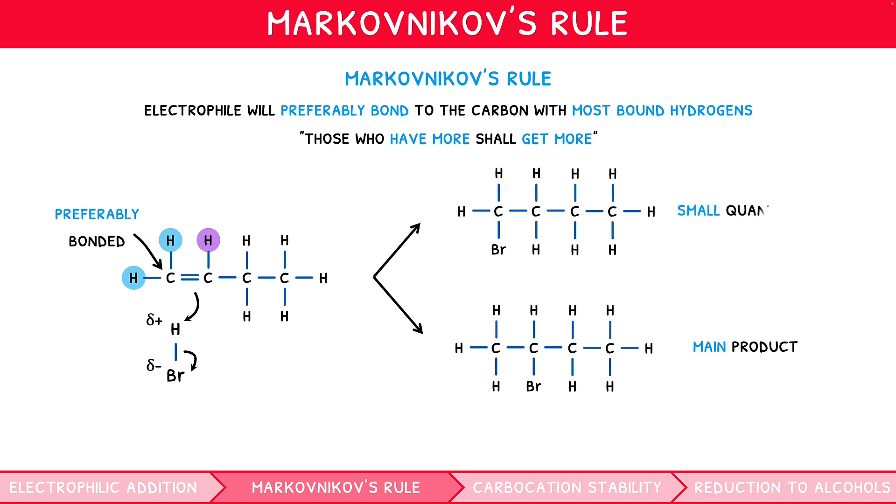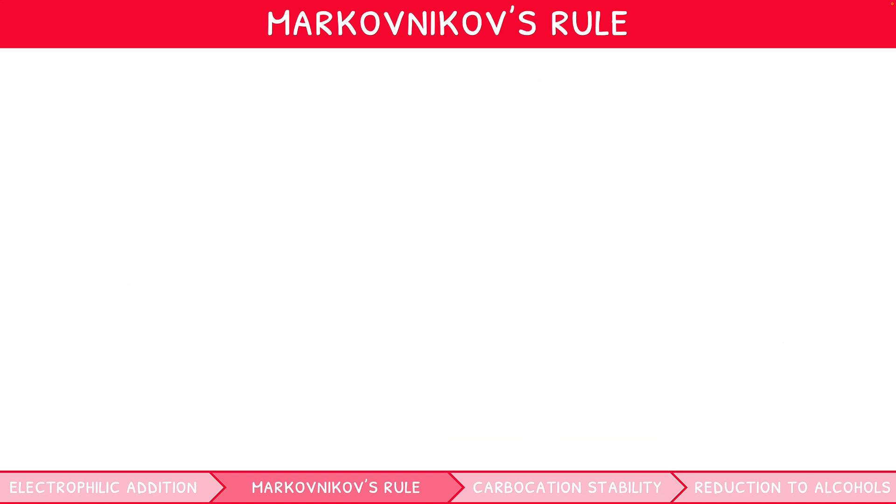However, small quantities of 1-bromobutane will be produced. It is vital that you understand that whilst Markovnikov's rule predicts the main product, it does not explain the phenomenon. If asked to explain this, you must refer to a principle called carbocation stability.